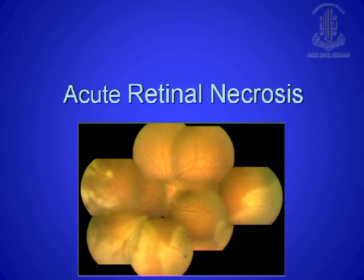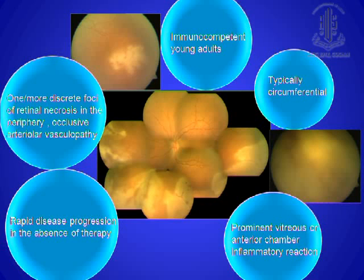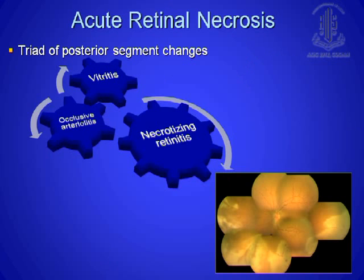We will first deal with acute retinal necrosis. As you know, it is usually seen in immunocompetent young adults. It starts as a small patch — one or more discrete foci in the periphery of retinal necrosis with occlusive vasculopathy — and then it progresses posteriorly as well as circumferentially, with a prominent vitreous and anterior chamber reaction. The triad of posterior segment changes involves vitritis, occlusive arteriolitis, and necrotizing retinitis, leading to a devastating disease in the retina.